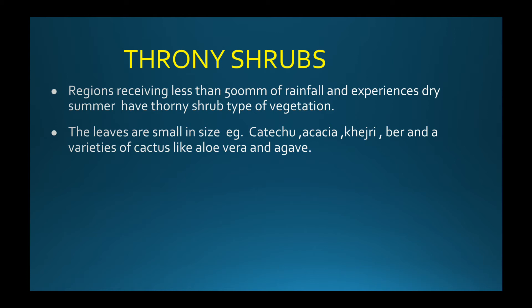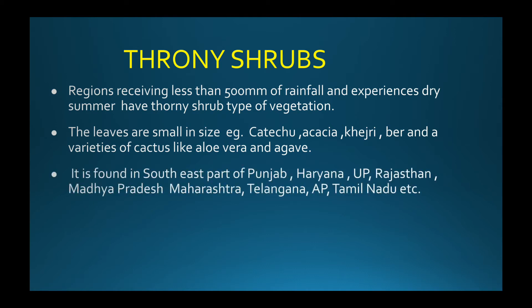The leaves of these plants are modified into thorns to minimize evaporation. Thorny shrubs are found in the south-east part of Punjab, Haryana, Uttar Pradesh, Rajasthan, Madhya Pradesh, Maharashtra, Telangana, Andhra Pradesh, Tamil Nadu, and other regions.